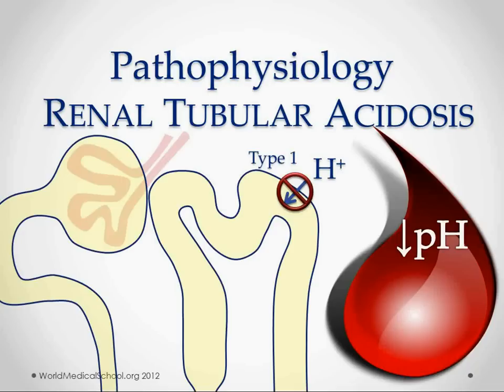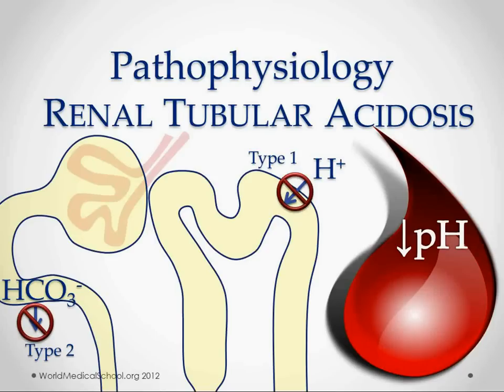We also call type 1 distal renal tubular acidosis because it happens in the distal tubules. If we're having a hard time getting HCO3 or bicarb back into the body from the urine — so we're having a problem with reabsorption of bicarb — then this is called type 2 RTA, or we also call it proximal RTA.